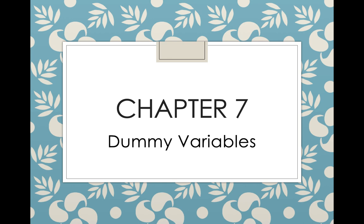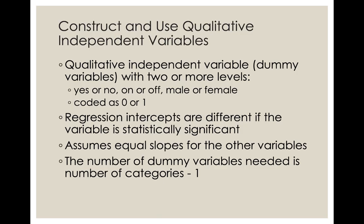Welcome to Chapter 7, which is about dummy variables. In this chapter, we're going to talk about how to construct in Excel and use qualitative independent variables. Qualitative independent variables, or we call them dummy variables, have two or more levels — for example, yes or no, on or off, male or female — and you're going to code them as zero or one.